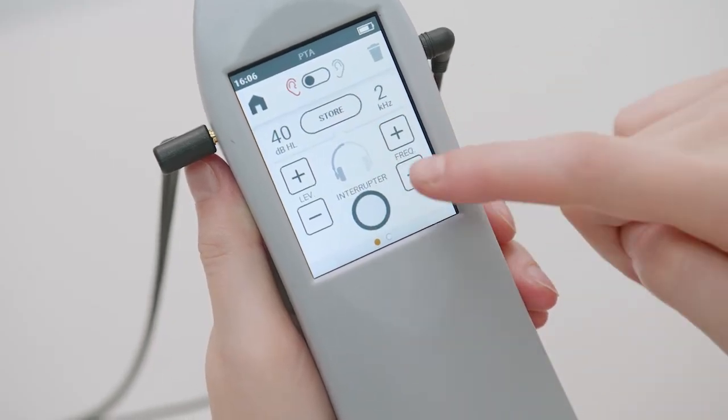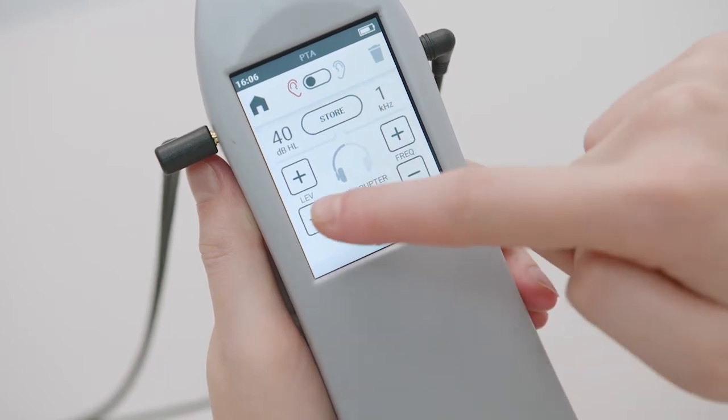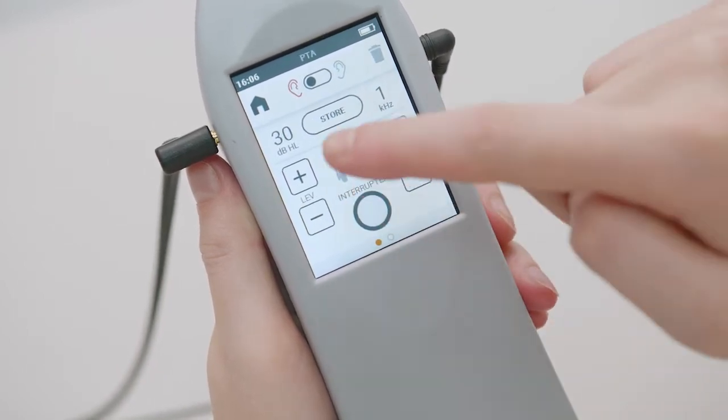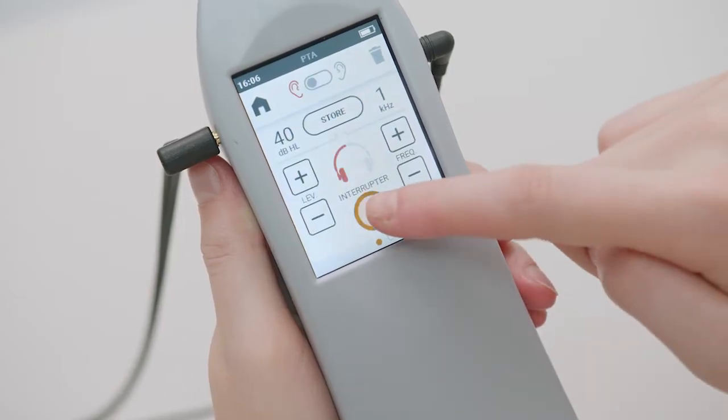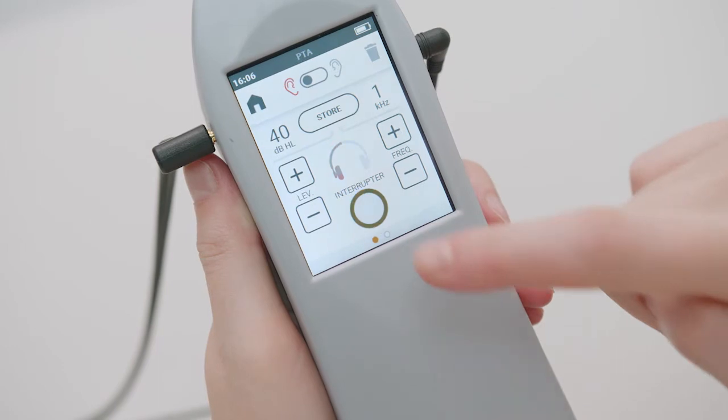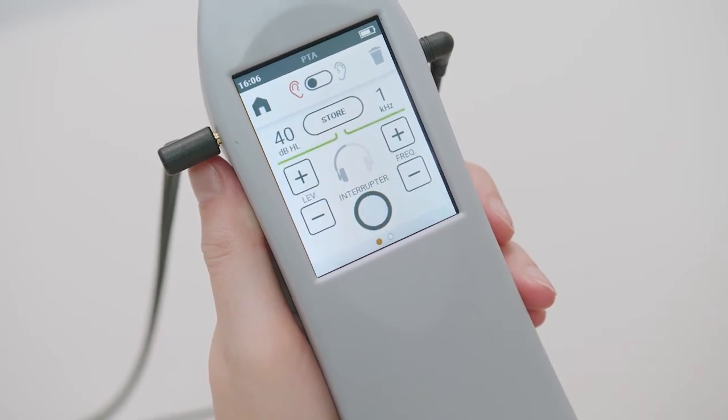The user can select the frequency and intensity of the stimulus using the plus and minus keys on the device and send the stimulus to the patient using the interrupter button. The green indicators are activated upon the patient's response and signify when the stimulus is heard.